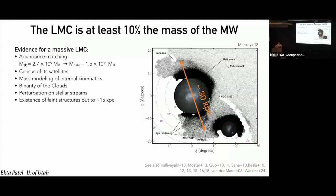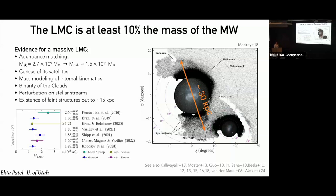Some of these lines of evidence we've already heard about, including mass modeling and the internal kinematics of the clouds, about the binarity of the clouds, which I'll touch on some more. I'll also talk about using the census of satellite galaxies to understand the mass of the LMC. And we've seen many beautiful images showing all of the faint structure that we've learned about more recently, really pointing to the fact that the LMC is definitely a few times 10^11 solar masses. There's a nice clustering between about one to three times 10^11 solar masses. So keep that in mind as we continue to talk about how the LMC is influencing the Milky Way and all of the other substructure in the Milky Way's halo.